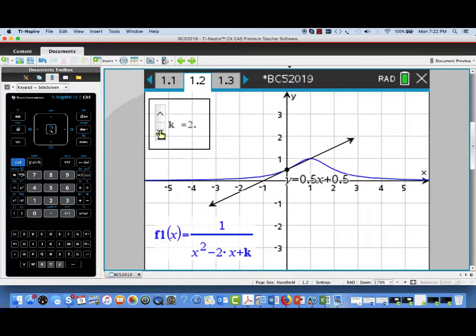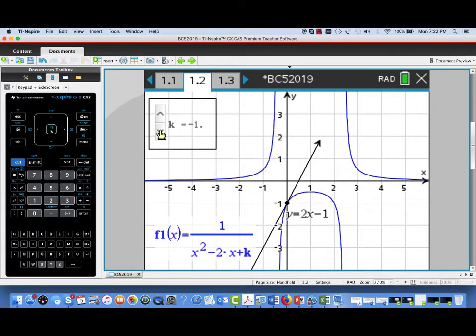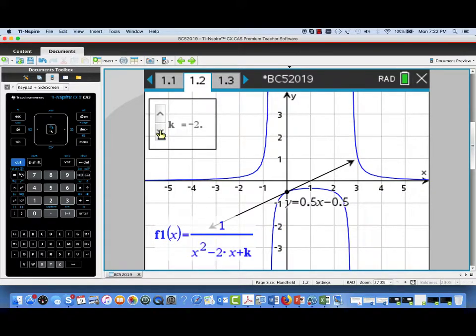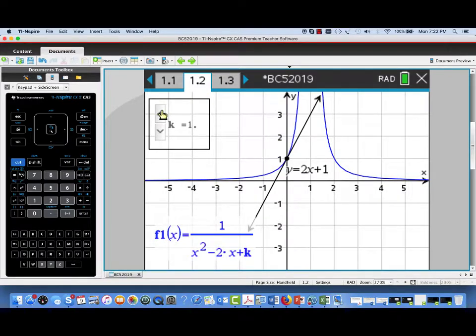As I change the value of k, of course, that's changing the tangent line, but you can see that's happening dynamically. And even as we continue on to these ones that have asymptotes, we're getting that tangent line unless that asymptote happens to be at x equals 0.